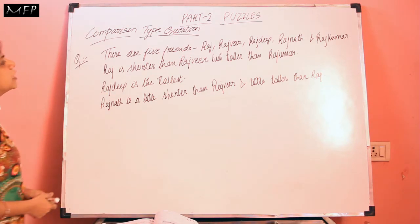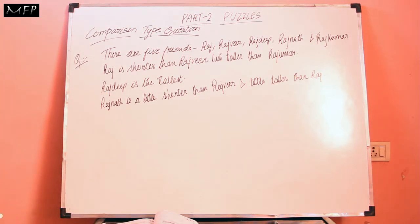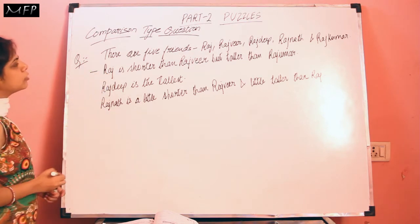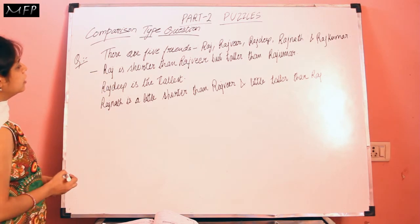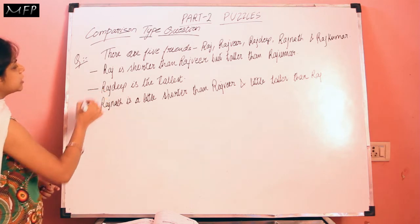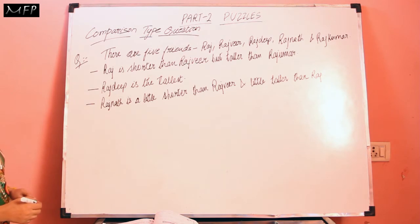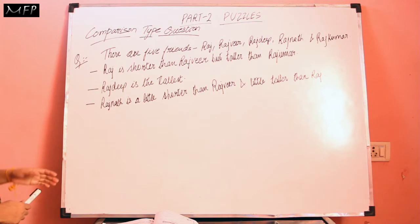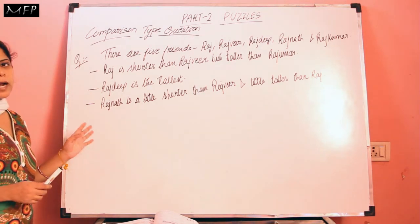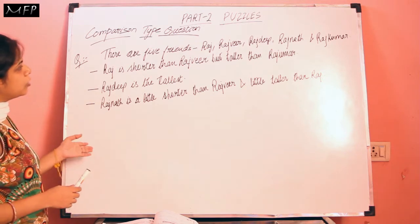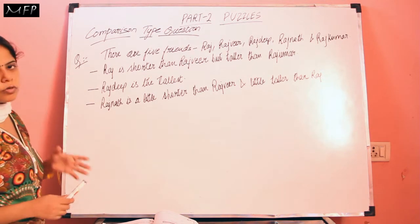The question is, there are five friends: Raj, Rajveer, Rajdeep, Rajnath and Rajkumar. The first statement is: Raj is shorter than Rajveer but taller than Rajkumar. Second: Rajdeep is the tallest. Third: Rajnath is a little shorter than Rajveer and a little taller than Raj. Based on these statements, we have to arrange these friends according to their heights, whether in ascending order or descending order, and then we will solve the questions.